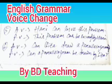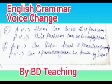Similarly, example 5, active voice: Hari can solve this problem. Passive voice will be: this problem can be solved by Hari. Example 6, active voice: can Sita draw a parallelogram? Passive voice will be: can a parallelogram be drawn by Sita? In this way we can change from active voice to passive voice for simple future tense in English grammar.